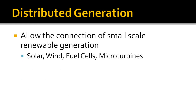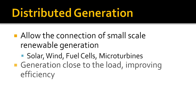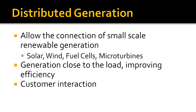Distributed generation will allow the connection of small-scale renewable generation sources such as solar, wind, fuel cells, and microturbines. Generation will be close to the load, which reduces transmission line construction costs and transmission power losses. Heat generated from microturbines can also be captured for heating purposes. There will also be increased customer interaction as they can sell unused power back to the electric utility. Reliability will also be improved as there is a wide variety of different generation sources connected to the grid.